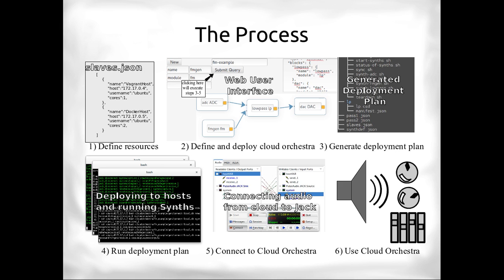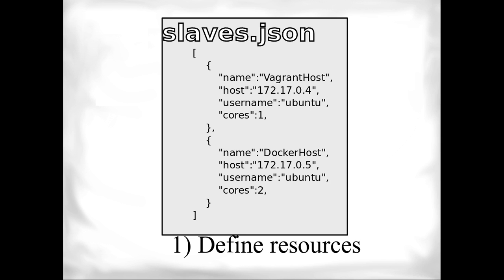We can solve it. We've got a model generator, and we've got something that searches for and evaluates good models. Now we actually want to use the cloud orchestra. The general process is to first define your resources, then define what your cloud orchestra looks like, then generate a deployment plan, run it, connect to it so you can hear it, and then use the cloud orchestra. First and foremost, you specify the hosts available to you — you define your resources by giving them IP addresses, the username, and the number of cores.